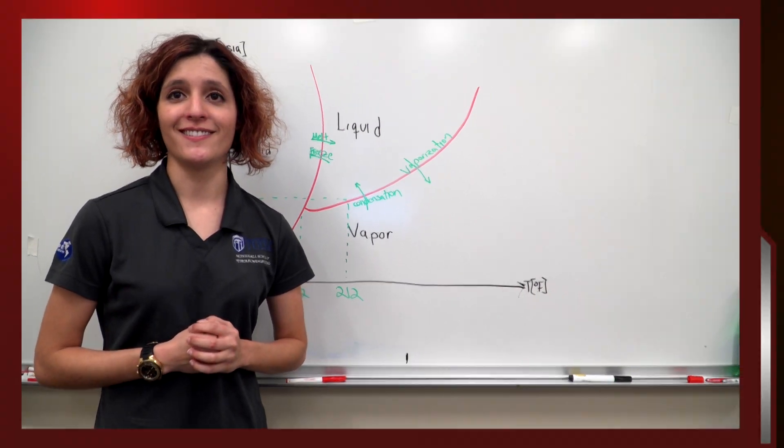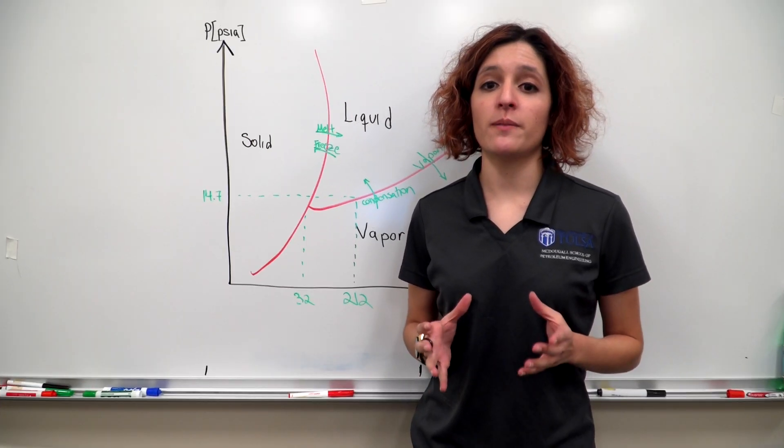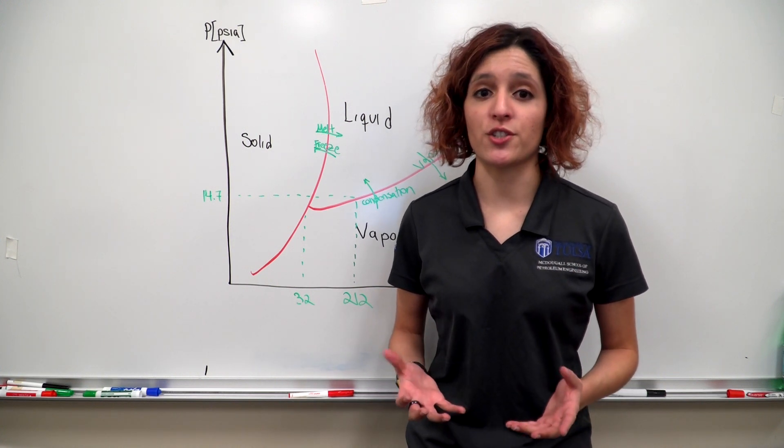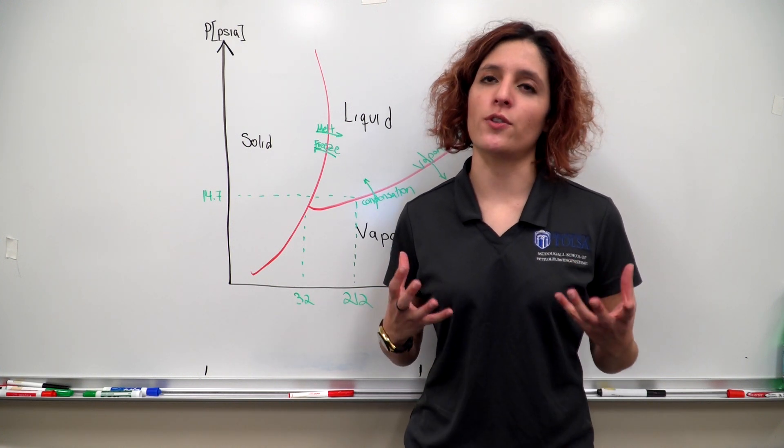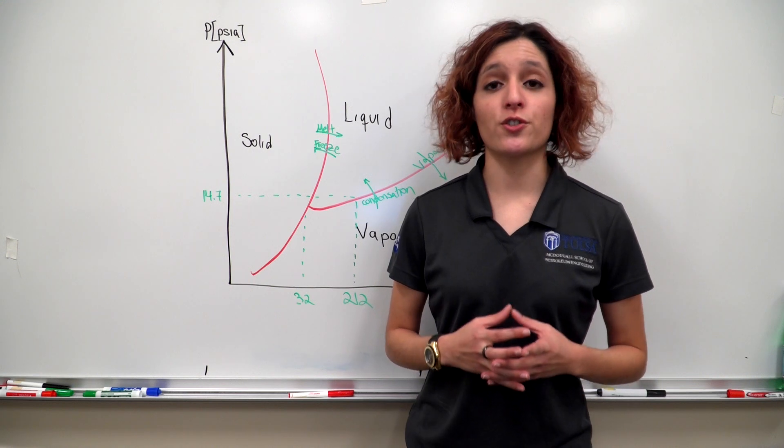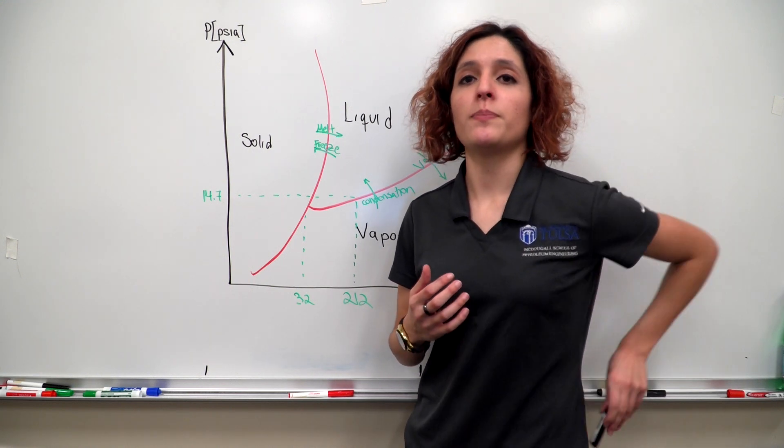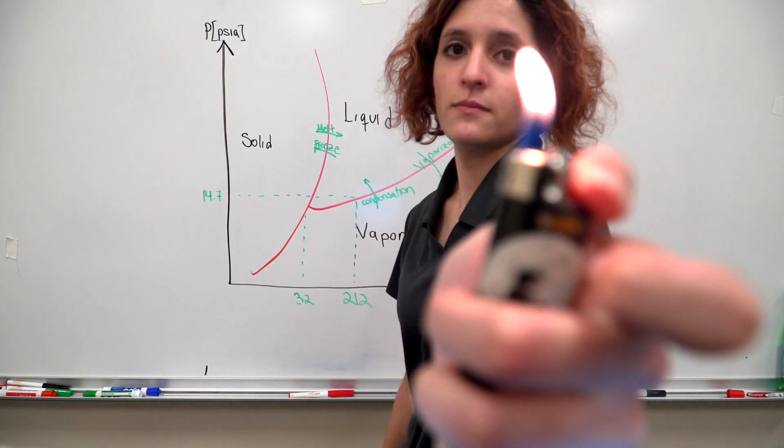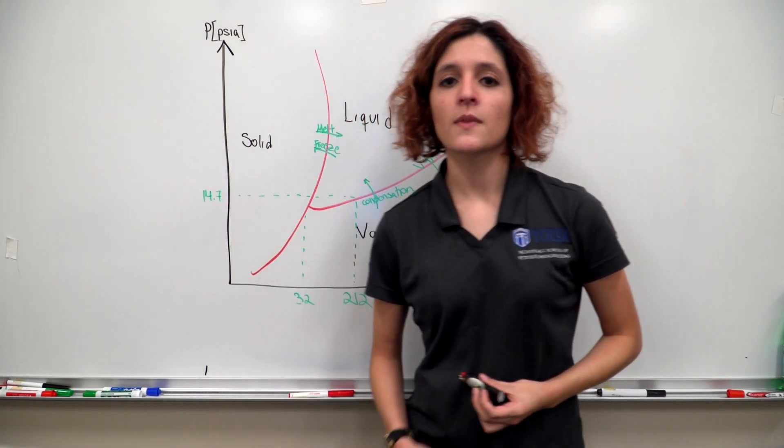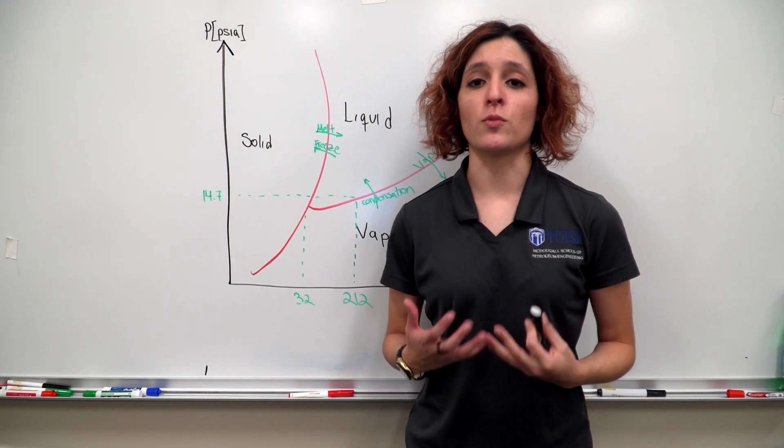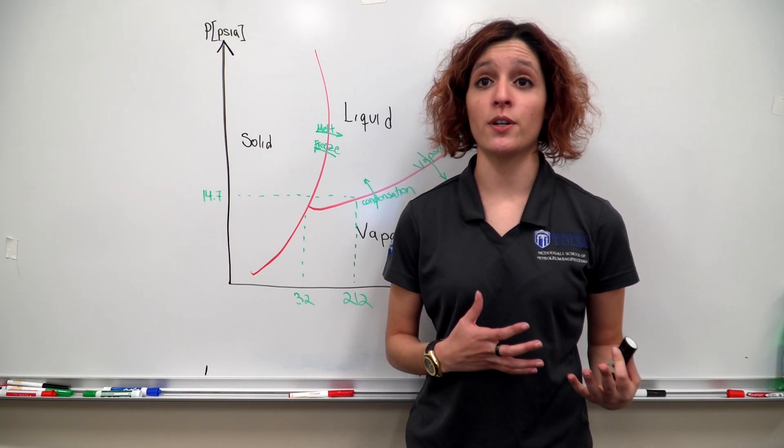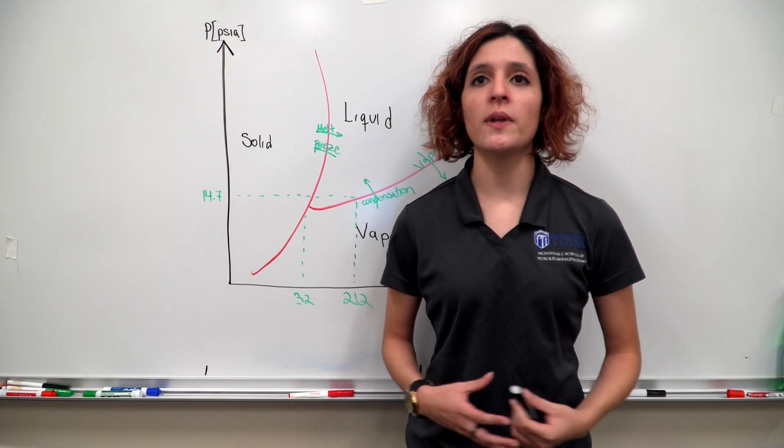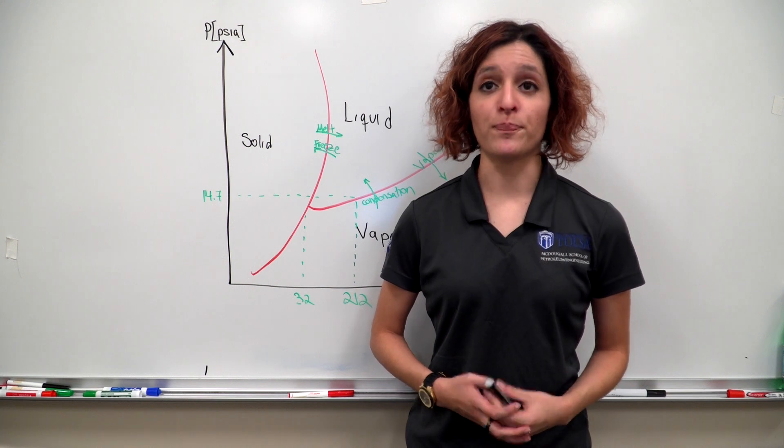At a constant temperature we can move from a liquid to a vapor by decreasing pressure. We call this isothermal expansion, which can be seen when liquid butane is released from a lighter. Likewise, using isothermal compression we can turn a vapor to a liquid. This is commonly used to make LNGs, liquefied natural gas.